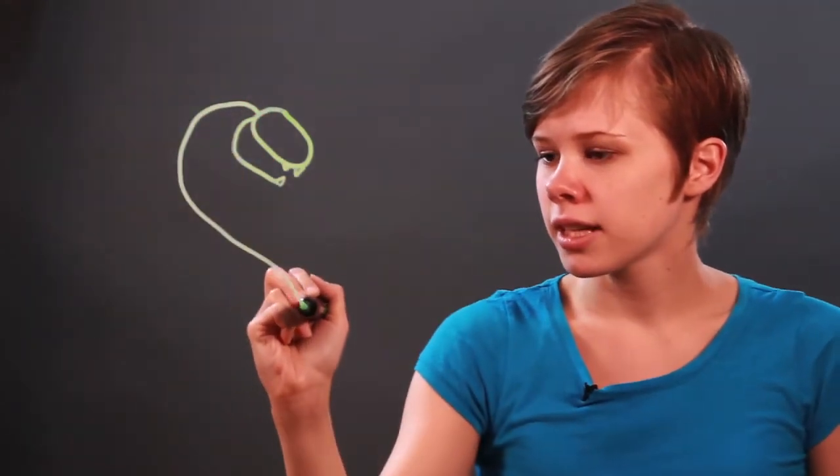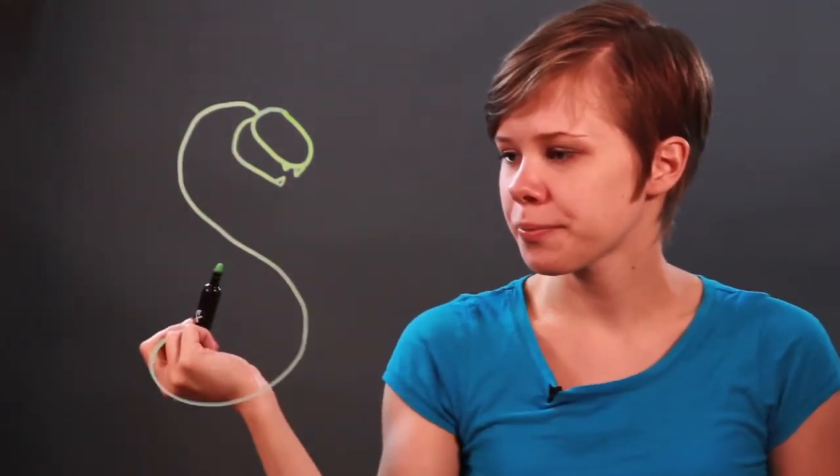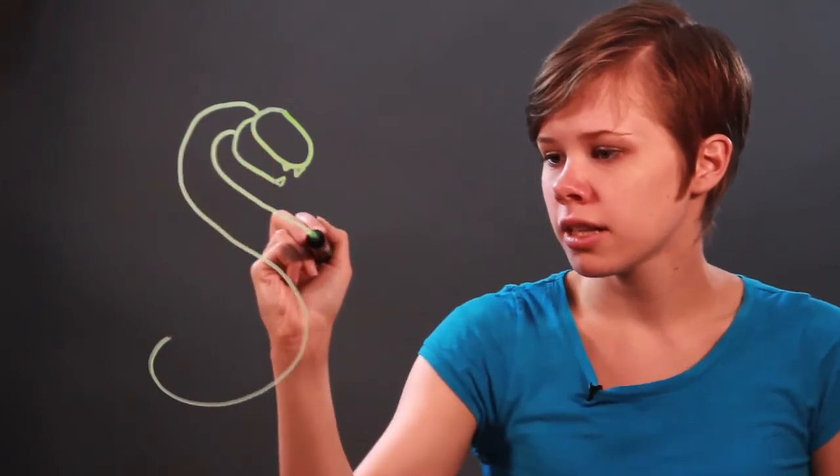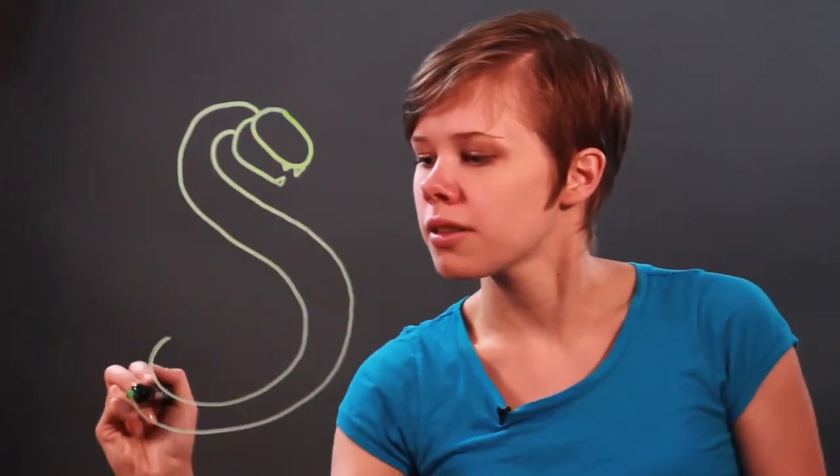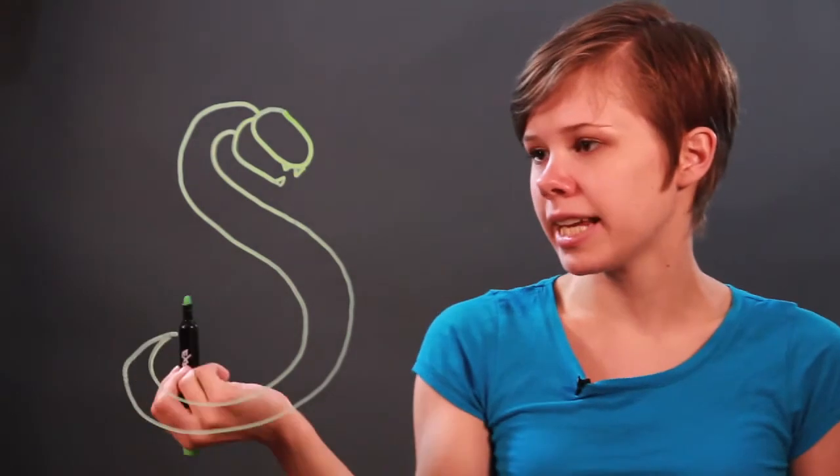Then, right above where the hook meets the oval, I'm going to draw a line that curves down in an S shape. And then, kind of in the middle of the hook, which is the jaw, I'm going to draw another line that follows the first line and comes to meet it at the end.